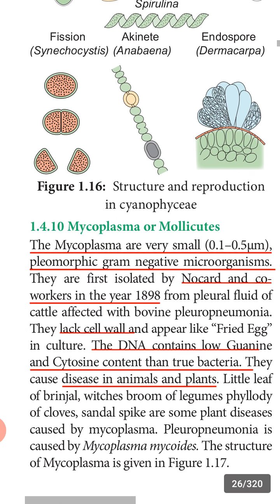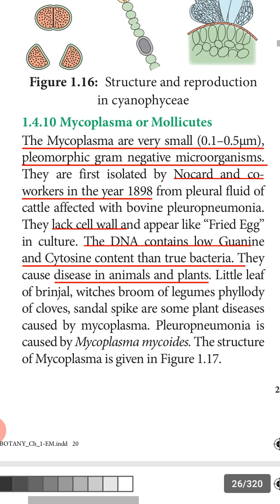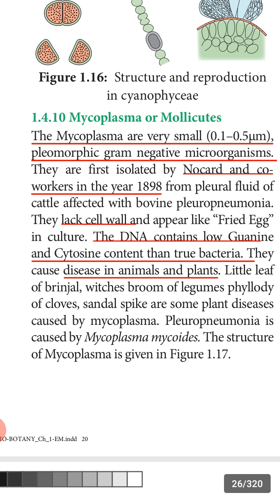Next we study mycoplasma, also called mollicutes. Mycoplasma are very small — size ranges from 0.1 to 0.5 micrometers. They are pleomorphic, meaning they do not have a fixed shape and keep changing shape. They are gram-negative microorganisms — they take the red color of safranin stain.